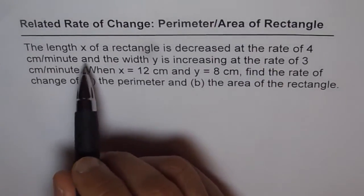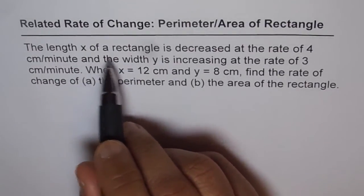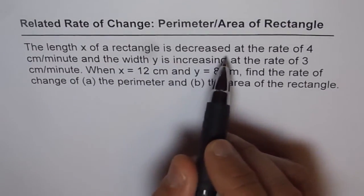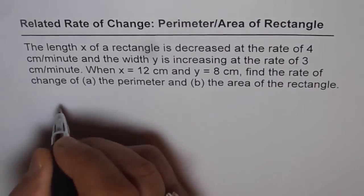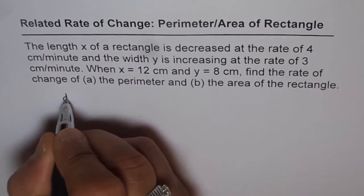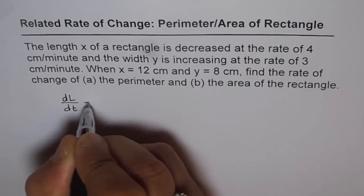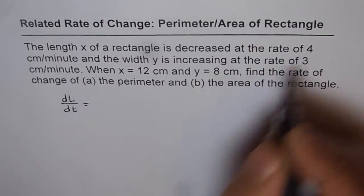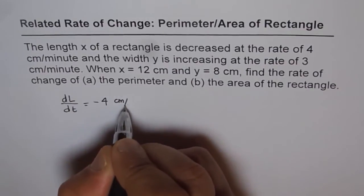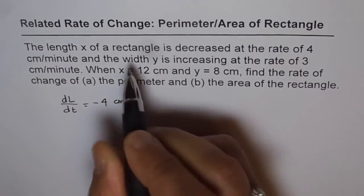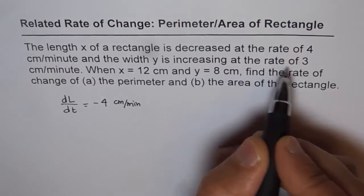It is given to us that the length x of a rectangle is decreasing at the rate of 4 cm per minute. That means dx/dt equals minus 4 cm per minute. And width y is increasing at the rate of 3 cm per minute.